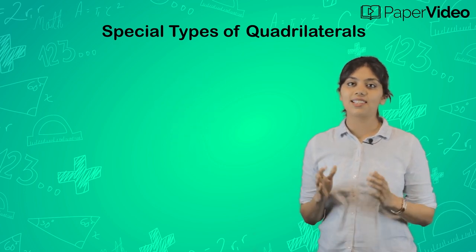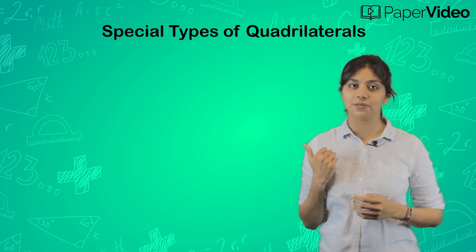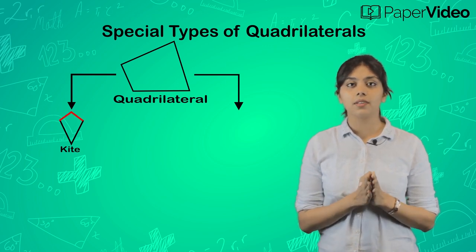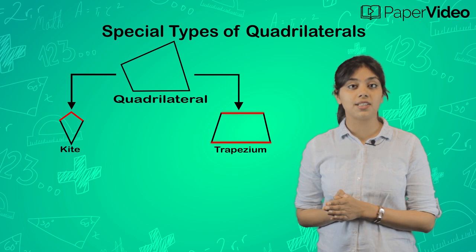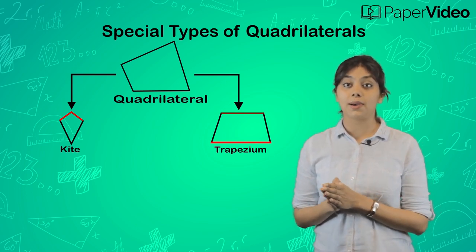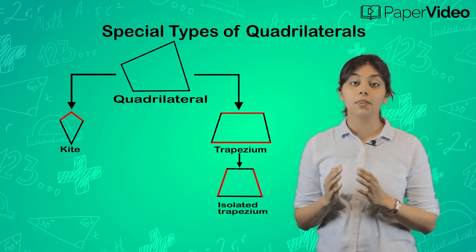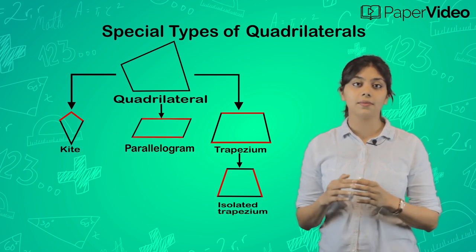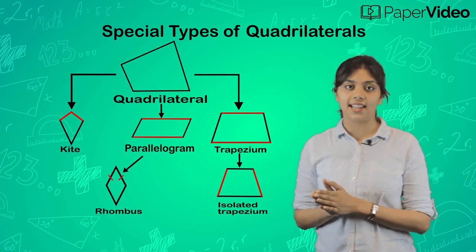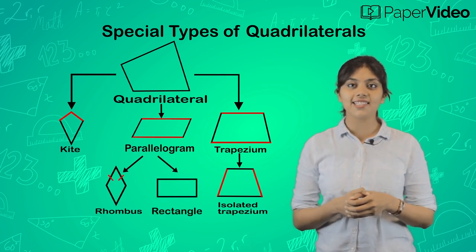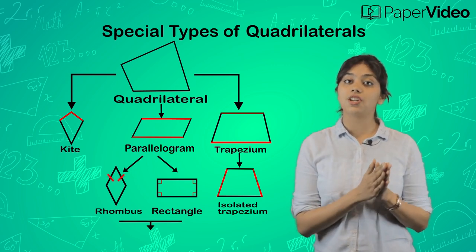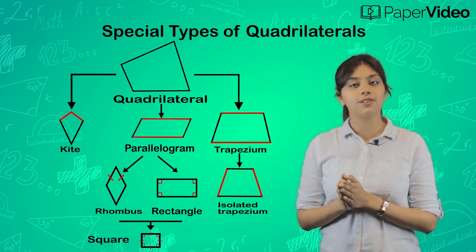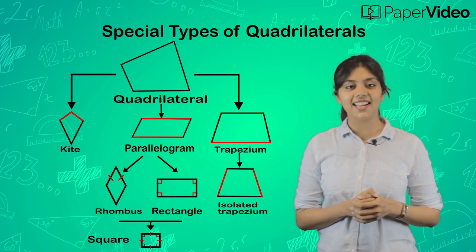Let us now quickly summarize all special types of quadrilaterals discussed in this video. A quadrilateral can be a kite whose two pairs of adjacent sides are equal in length, or a trapezium whose one pair of opposite sides is parallel. If the non-parallel sides of a trapezium are equal, then it is an isosceles trapezium. A quadrilateral can also be a parallelogram whose both pairs of opposite sides are parallel. A parallelogram can be a rhombus whose all sides are equal, or a rectangle whose all angles are equal to 90 degrees. The combination of a rhombus and a rectangle is a square whose all sides are equal and all angles are equal to 90 degrees. These are some special types of quadrilaterals that we study in geometry.